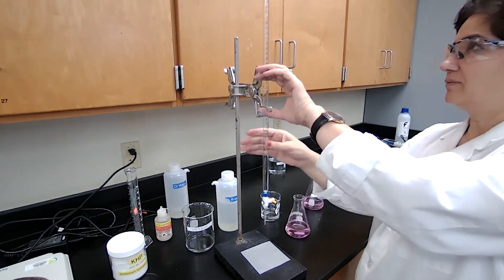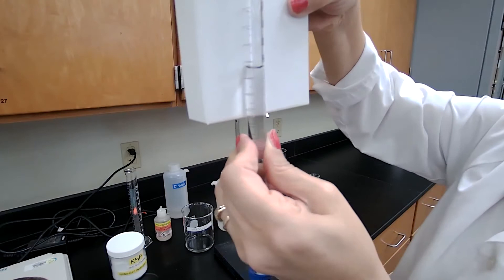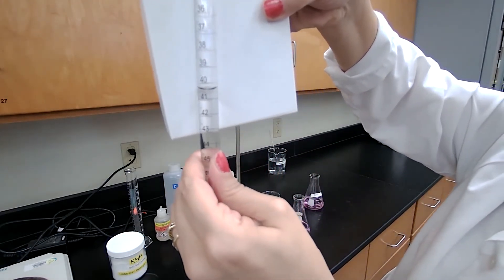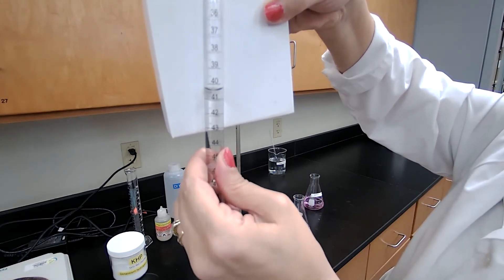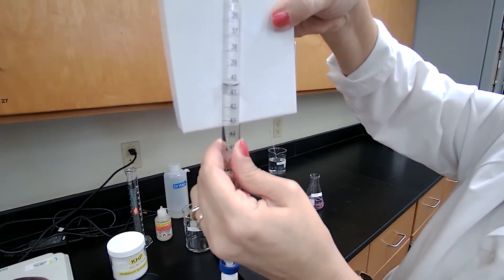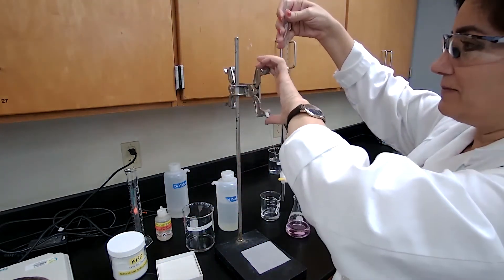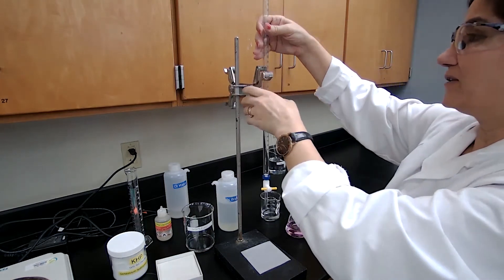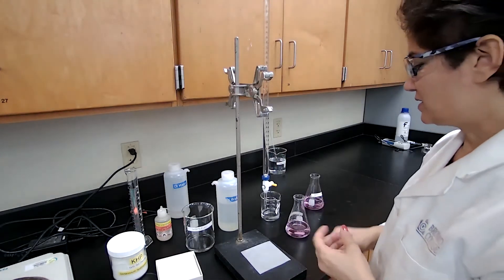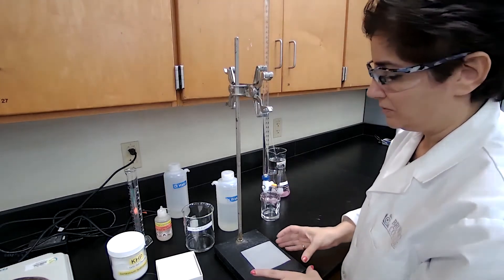Now we have the final burette reading between 40.3 and 40.4. You can estimate the last digit. The two numbers in mass of the KHP and the volume of the sodium hydroxide are close to one another. We don't have to do the third trial of the experiment. So we are done with the standardization of sodium hydroxide.